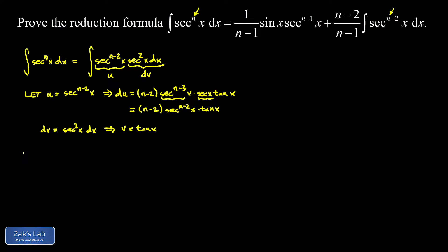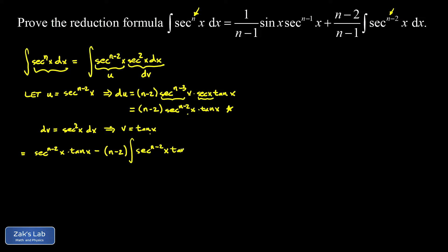Now we apply the integration by parts formula, remembering everything we're doing modifies the original integral secant to the n of x dx. The integral becomes u times v — that's secant to the n minus two of x times tangent x — minus the integral of v du. Moving the constant n minus two out in front, we get minus n minus two times the integral of secant to the n minus two of x times tangent squared x dx.